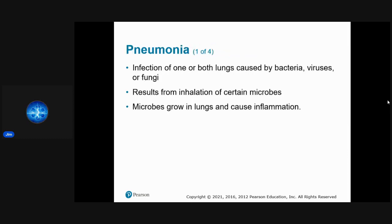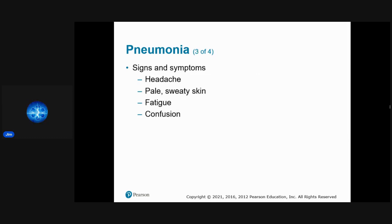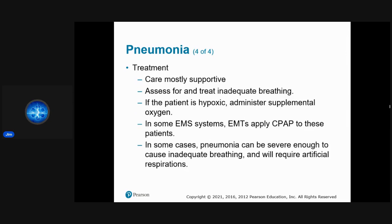Pneumonia is an infection of one or both lungs caused by bacteria, virus, or fungus from inhaling microbes that grow and cause inflammation. Signs include shortness of breath with or without exertion, cough, fever or severe chills, sharp pleuritic chest pain that worsens on inhalation, headache, pale sweaty skin, fatigue, and confusion. Treatment is mostly supportive: treat inadequate breathing, give supplemental oxygen if hypoxic. CPAP may be used per protocol.